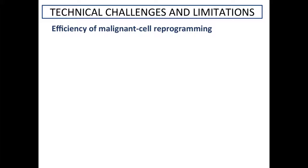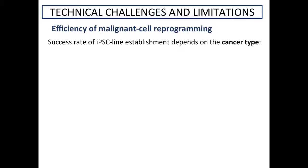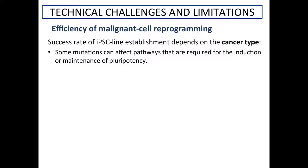But eleven years after iPS cells were first generated, why don't we have more iPS-cell-based cancer models? There exist some technical challenges, and the two most crucial bottlenecks are the efficiency of malignant cell reprogramming and the ability to differentiate the iPS cells into the cell type of interest. Regarding reprogramming efficiency, the exact success rate of iPS cell establishment depends on the cancer type. Some cancer-associated lesions may be incompatible with iPS generation because such lesions may affect pathways required for the induction or maintenance of pluripotency.